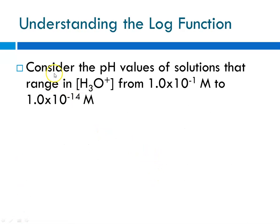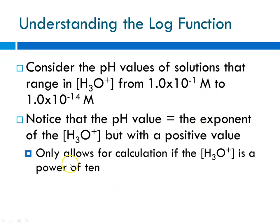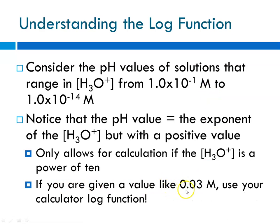Understanding the log function a little more: for hydronium ion concentrations ranging from 1×10⁻¹ up to 1×10⁻¹⁴, the pH value equals the exponent of the hydronium ion made positive, because pH is minus the log. For example, the log of 10⁻¹ (which is 0.1) is minus 1, so pH equals 1. This shortcut works when the concentration is a nice 1 times an exponent. For anything else — such as 0.03 molar — please use your calculator's log function button.